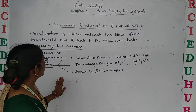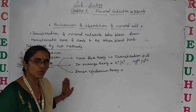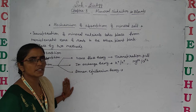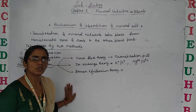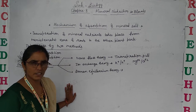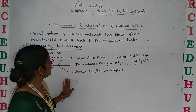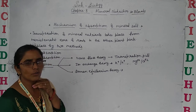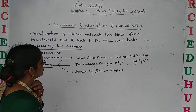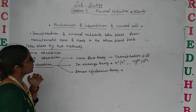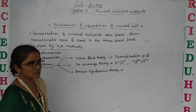Before that, we will discuss all the major and micronutrients which are essential for plants. We will also discuss their deficiency diseases. Now let's discuss the mechanism of absorption of mineral salts — how these mineral elements or nutrients are absorbed by the plants.